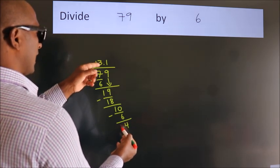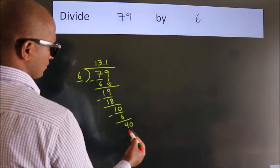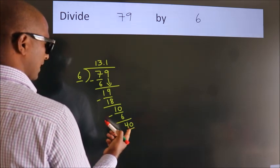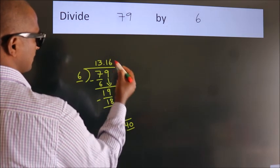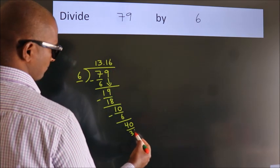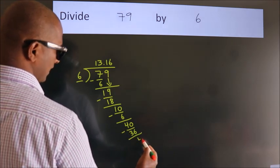After this, we already have the decimal, so directly take 0, giving us 40. A number close to 40 in the 6 table is 6 sixes, which is 36. Now we subtract and get 4.